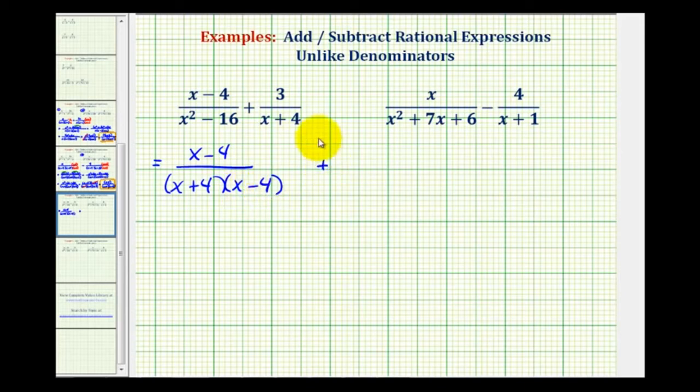Now for the second fraction, we just have three all over x plus four. Now if we go back and take a look at this fraction here, notice how we have a factor of x minus four over a factor of x minus four. So this actually simplifies to one.